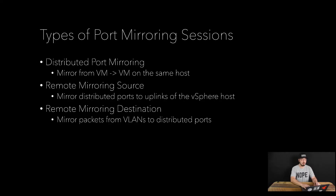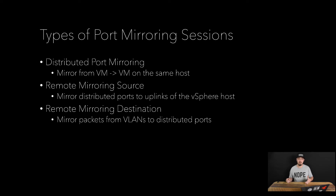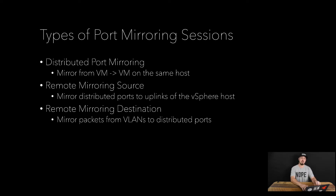The next type is remote mirroring destination, which is kind of the reverse of that last one. We're saying I want to take packets from, say, VLAN 52 and mirror those to one of my distributed ports — which in this case would be one of my virtual machines. So maybe my virtual machine is the monitoring station and I want to capture traffic coming on the network on VLAN 52 or 27, and send it to that VM. That would be remote mirroring destination.